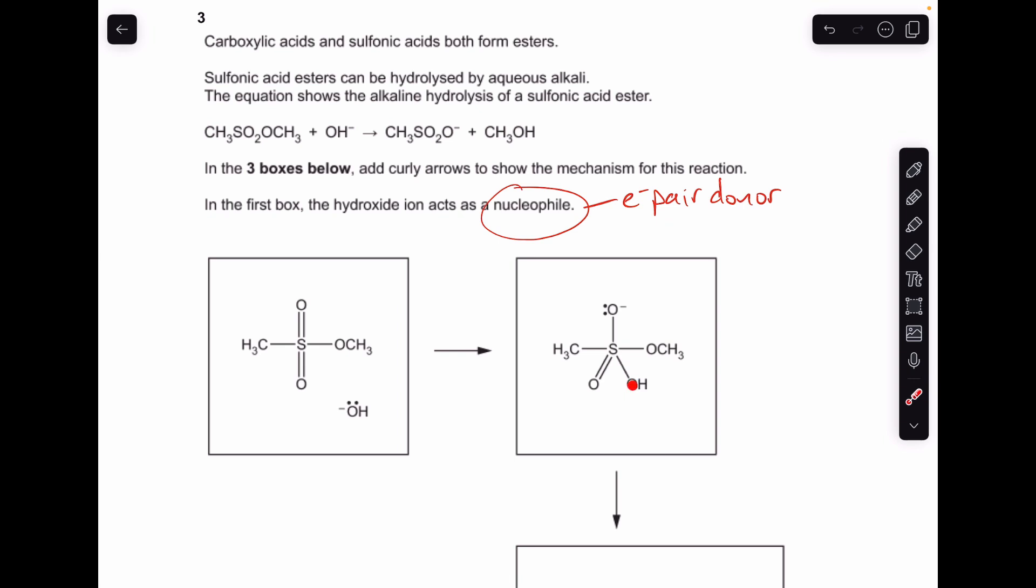If we look at the second box, you can see that the oxygen of the hydroxide ion has bonded to that sulfur. So in terms of curly arrows, what happened there... Okay, so I've just zoomed in.